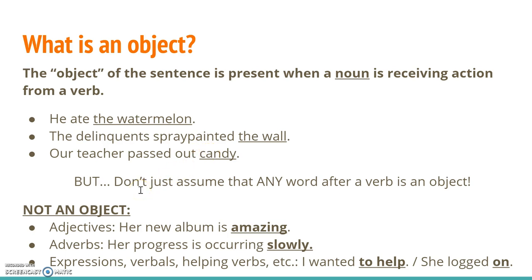However, don't fall into the trap of assuming that any random word that appears after a verb must be an object, because that's not necessarily true. Other kinds of words can go after a verb too — adjectives, adverbs, and other kinds of expressions or verbals or helping verbs can go in close proximity to the verb, and that doesn't make them objects. If I say 'her new album is amazing,' the word amazing is not an object; it's just an adjective describing the album. That's an important distinction to keep in mind.